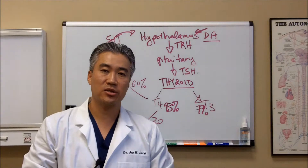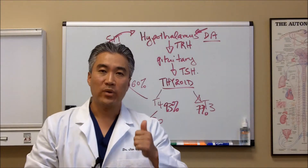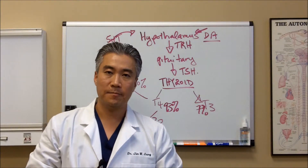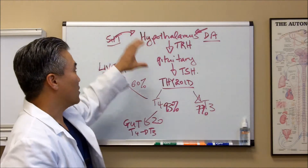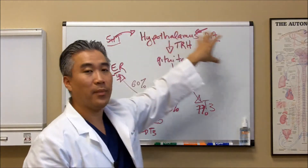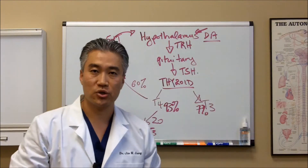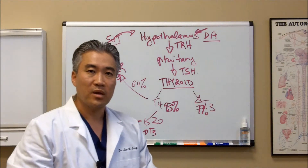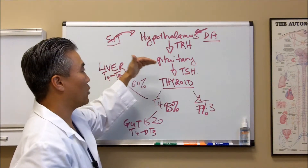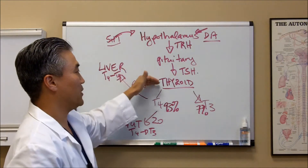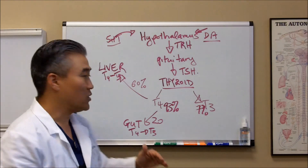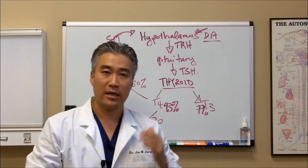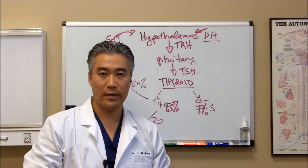When we look at normal physiology, we have to understand where the dysfunctions can lie. If we have constant stress and it starts to impact our brain function, it can impact our thyroid gland. If we have primary thyroid issues, it can affect the thyroid gland directly. And if we have liver or gut dysfunction, it can also impact our thyroid function.